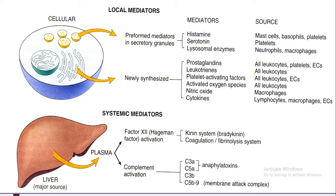The systemic mediators of inflammation are produced from the liver. More or less all of them are stimulated and activated by a factor called Hageman factor, which is Factor 12 of the clotting system. Factor 12 is responsible for stimulating the coagulation pathway, the fibrinolysis pathway, the kinin pathway, and the complement activation system.